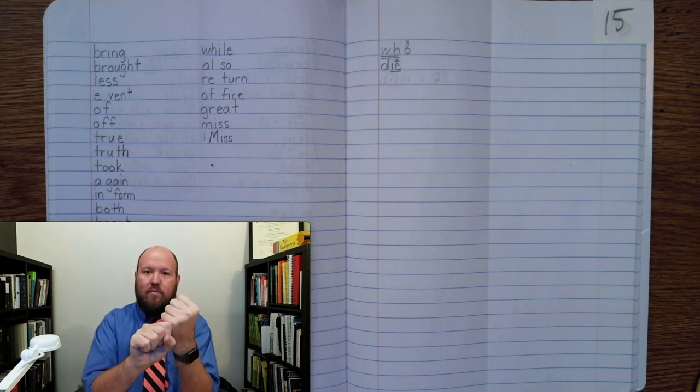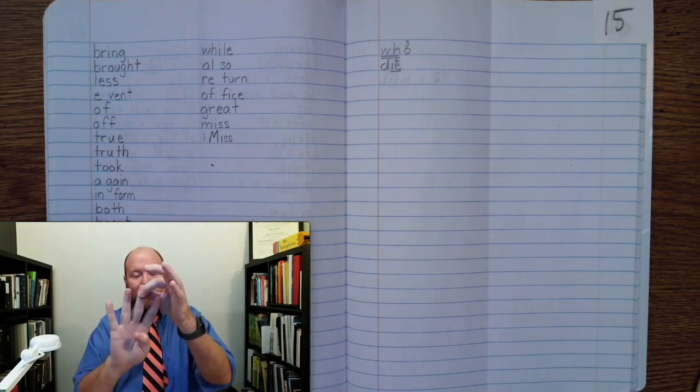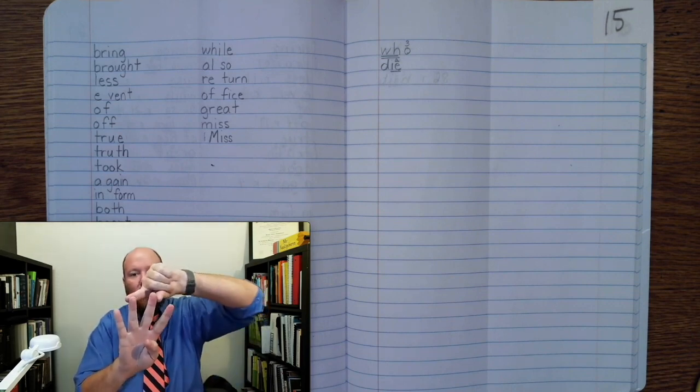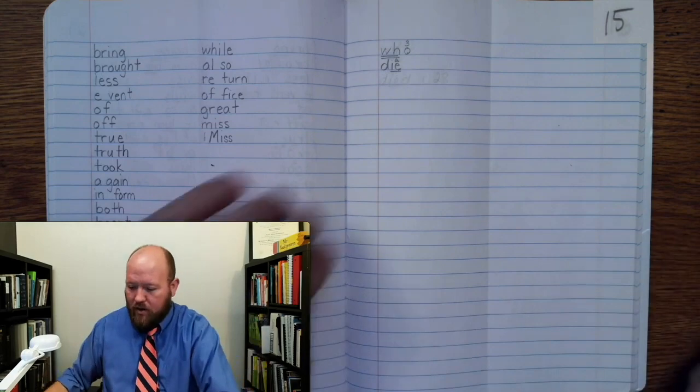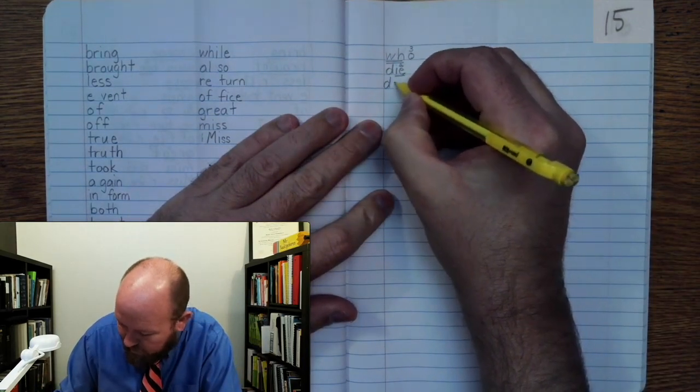Now put it together. Now we have D-I-E-D. Now I got rid of the silent final E, but the E from my ED phonogram now joins that I and makes the same phonogram that was there. Alright, so write died. D-I.